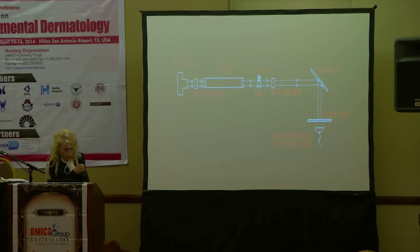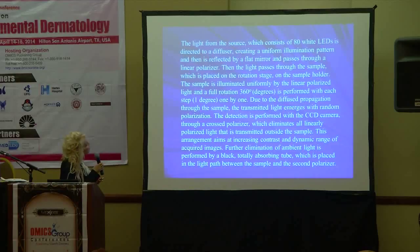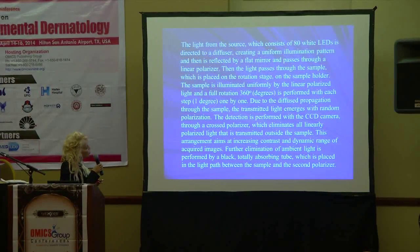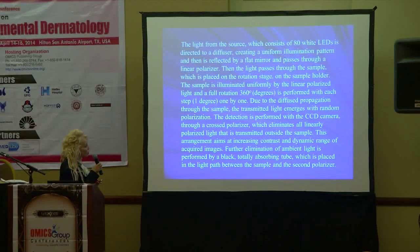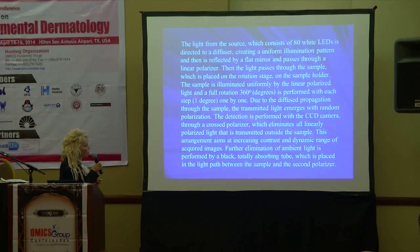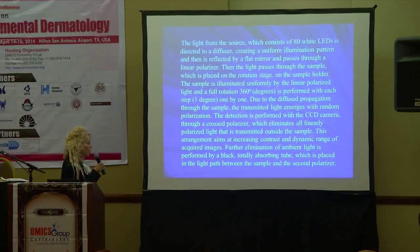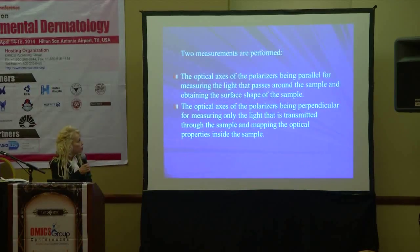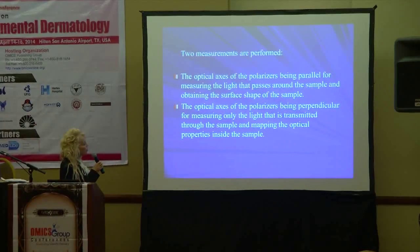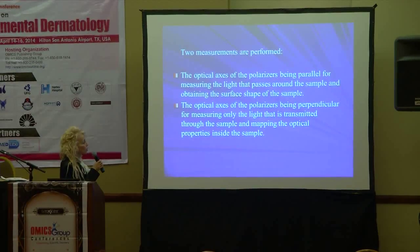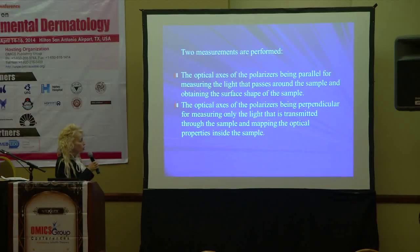Here again is our system. The light from the source consists of eight white LEDs, going to a diffuser, and passes through the sample. The sample is illuminated uniformly in linearly polarized light and the full rotation takes place. Due to diffuse propagation through the sample, the transmitted light emerges with random polarization. Detection is performed with a CCD camera through a cross-polarizer, which eliminates all linear polarized light transmitted outside the sample. This arrangement aims at increased contrast and dynamic range of acquired images. A black totally absorbing tube, placed between the sample and the second polarizer, eliminates ambient light. The optical axes of the polarizers are parallel for measuring light passing around the sample and mapping surface shape, and perpendicular for measuring only light transmitted through the sample and mapping the optical properties inside.